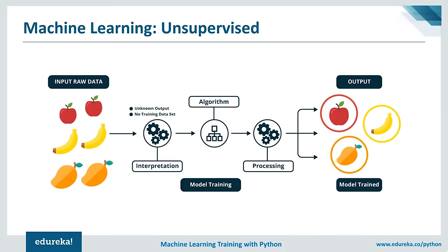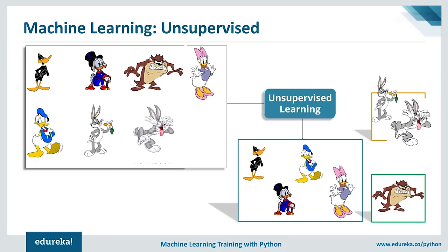Another example: an unsupervised learning algorithm processes an unlabeled training dataset and groups pictures into three different clusters based on characteristics. However, the algorithm cannot add labels to the groups — it only knows which data instances are similar but cannot identify the meaning of each group. These are called unsupervised because, unlike supervised learning, there are no correct answers and no teacher — algorithms discover interesting structure in the data on their own.